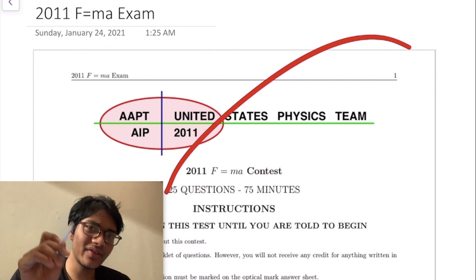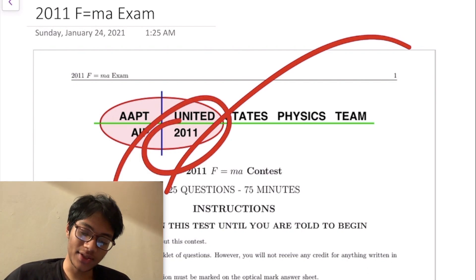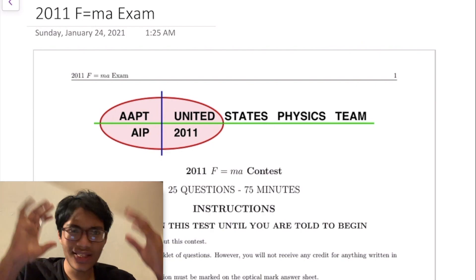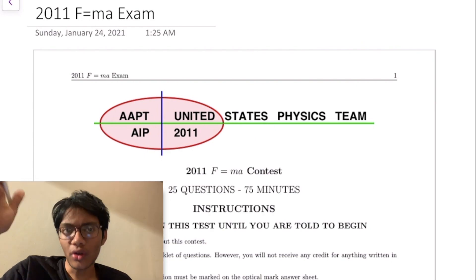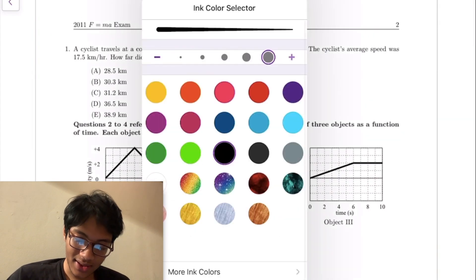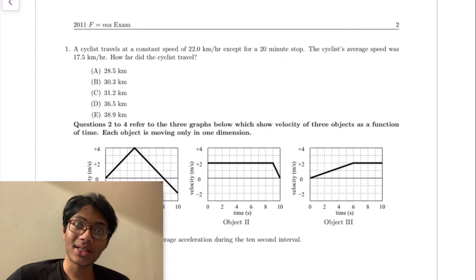F equals MA exam, specifically the 2011 version. I've got it right here and I'm working off my iPad, so you're going to see it right on the screen in its full glory. Let's get to the questions. Here's our first question - we got a cyclist traveling.